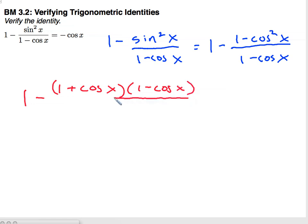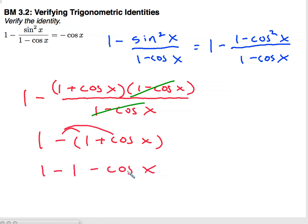1 minus cosine x. Now my 1 minus cosines will cancel, and I end up having 1 minus 1 plus cosine x. Distributing the negative sign, I have 1 minus 1 minus cosine x.